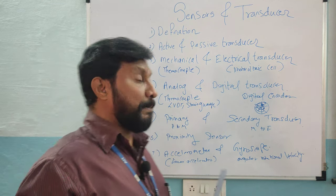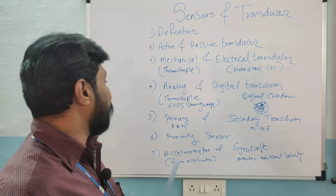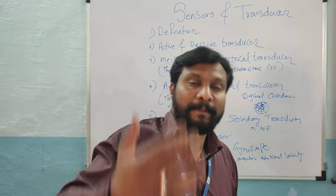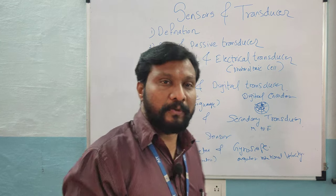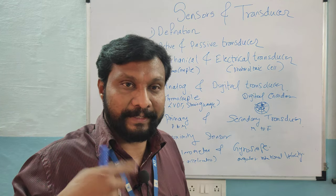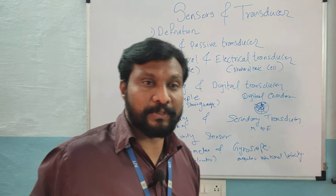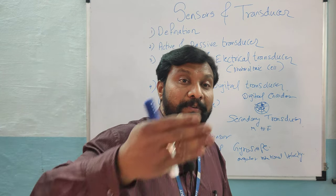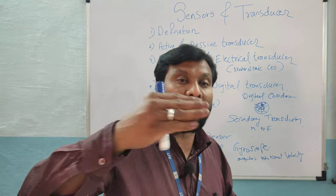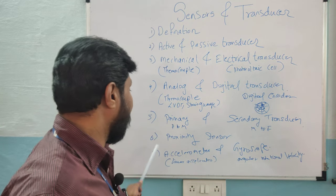A primary transducer converts any physical parameter into a mechanical output. A secondary transducer converts any mechanical input or mechanical parameter into an electrical output.